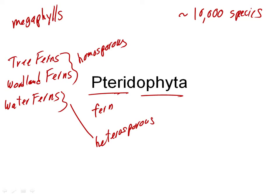We're not going to talk about the water ferns very much — we'll come back to them near the end of the lecture and talk about the heterosporous ferns just very briefly. Now the homosporous ferns in the Pteridophyta have a different kind of sporangium. Almost all the extant land plants we've been discussing have eusporangia.